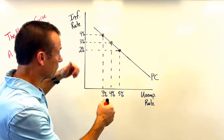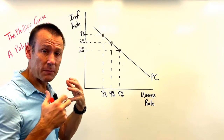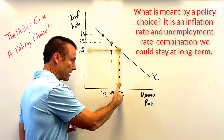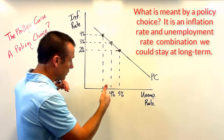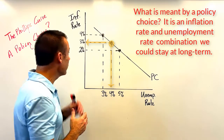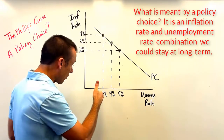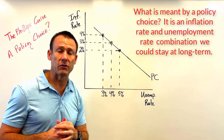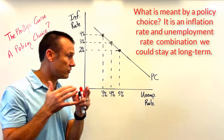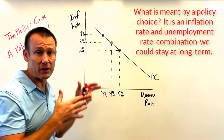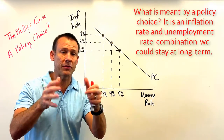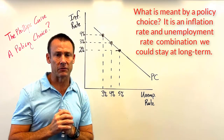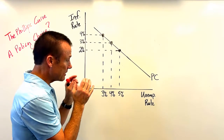It was originally thought that if you could graph your Phillips Curve, this was a policy choice — we could choose a 5% unemployment rate with 2% inflation, or a 4% unemployment rate with 3% inflation, or even a 3% unemployment rate with 4% inflation. We could choose this combination and just go with it. But that did not end up being the case.